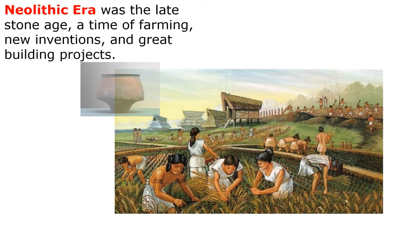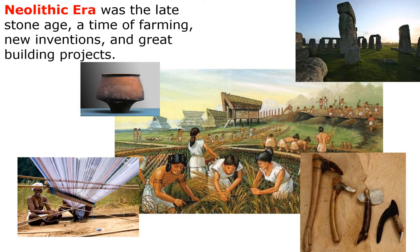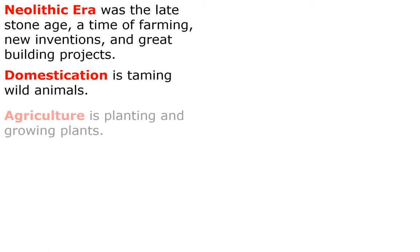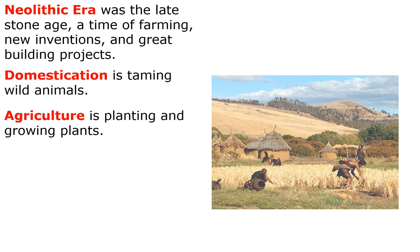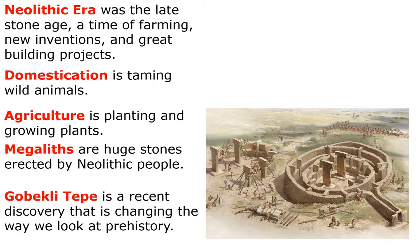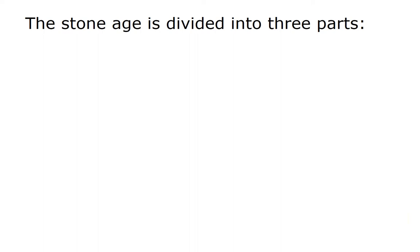Vocabulary: The Neolithic era was the late Stone Age — the time of farming, new inventions, and great building projects. Domestication is just a fancy term for taming wild animals. Agriculture is planting and growing plants. Megaliths are huge stones erected by Neolithic people. Gobekli Tepe is a recent discovery that's changing the way we look at prehistory.